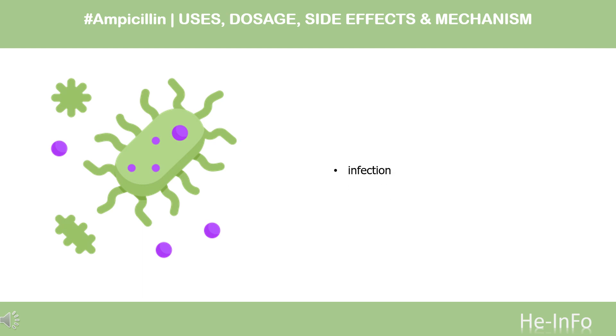Ampicillin is used for the treatment of infections — respiratory, GI, UTI, and meningitis.